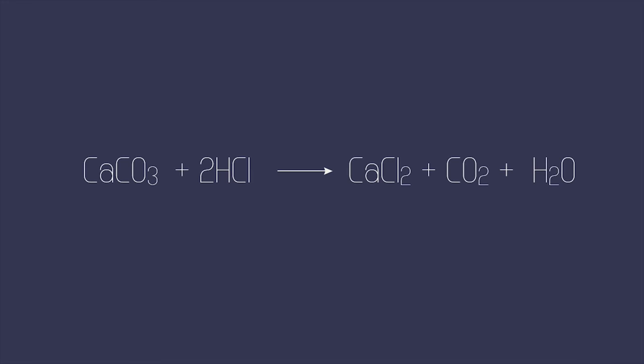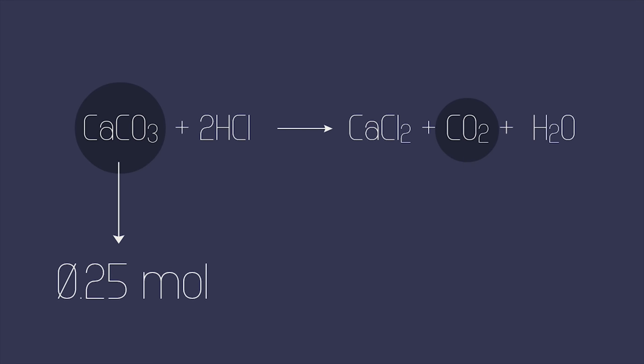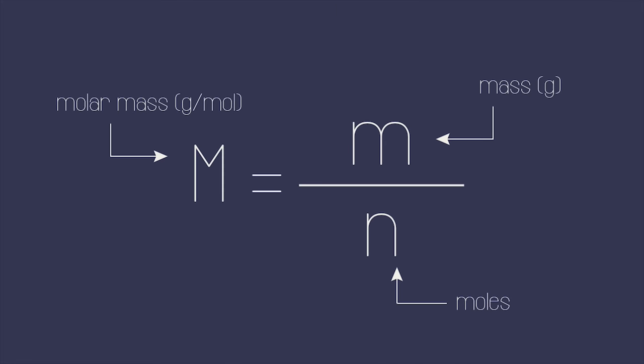Remember from the equation that each mole of calcium carbonate used produces one mole of carbon dioxide. You are using 0.25 moles here. Then you need to work out the molar mass of carbon dioxide using your periodic table. Finally, use this formula to work out the mass. Pause the video now and resume when you have the answer.